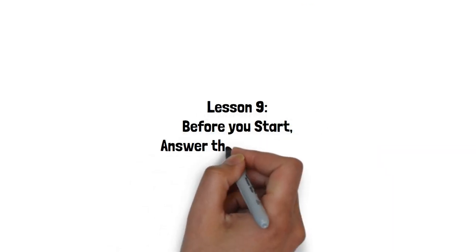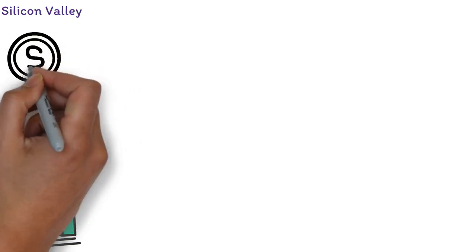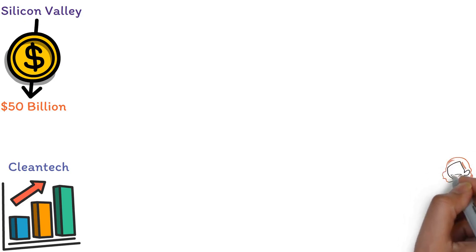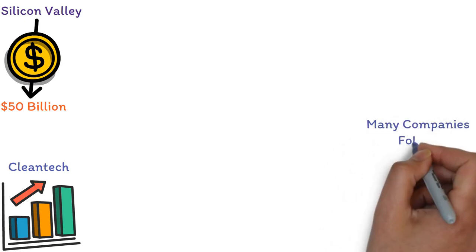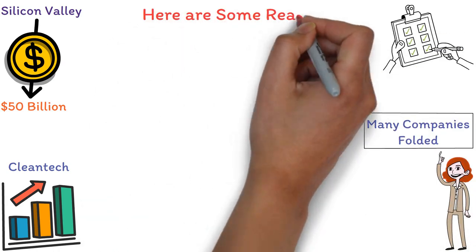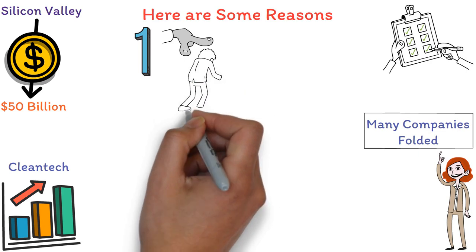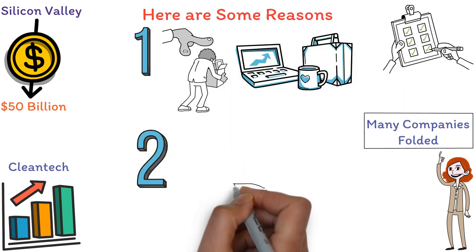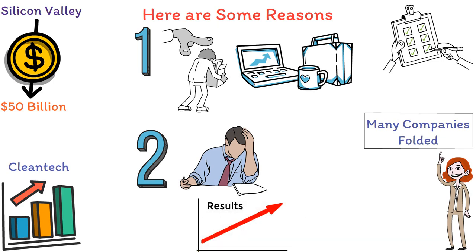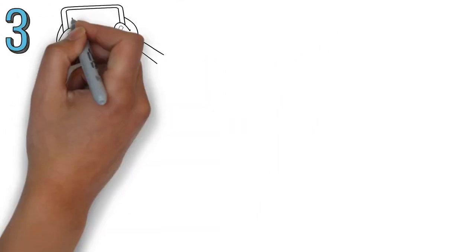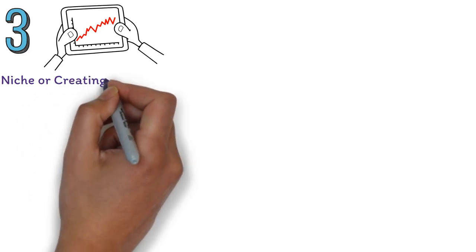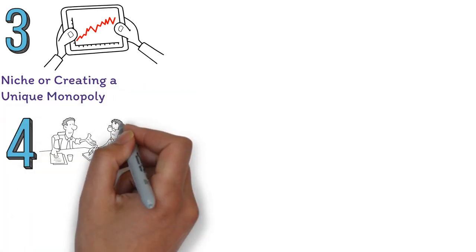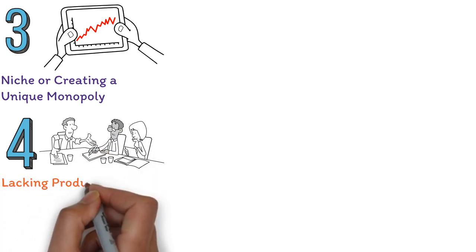Lesson 9: Before you start, answer these questions. During the cleantech boom between 2005 and 2009, Silicon Valley saw an influx of over $500 billion in investments. Despite the initial enthusiasm, many companies folded, mainly due to poor market analysis. Here are some reasons. One, cleantech startups failed to realize that outperforming existing energy giants required technology that was exponentially superior. Two, many misjudged the pace of advancements in clean technology, expecting rapid progress when the reality was slow and steady growth. Three, these companies jumped into a cutthroat trillion-dollar energy industry without securing their niche or creating a unique monopoly. Four, often, cleantech companies were led by non-technical leaders lacking product development expertise.